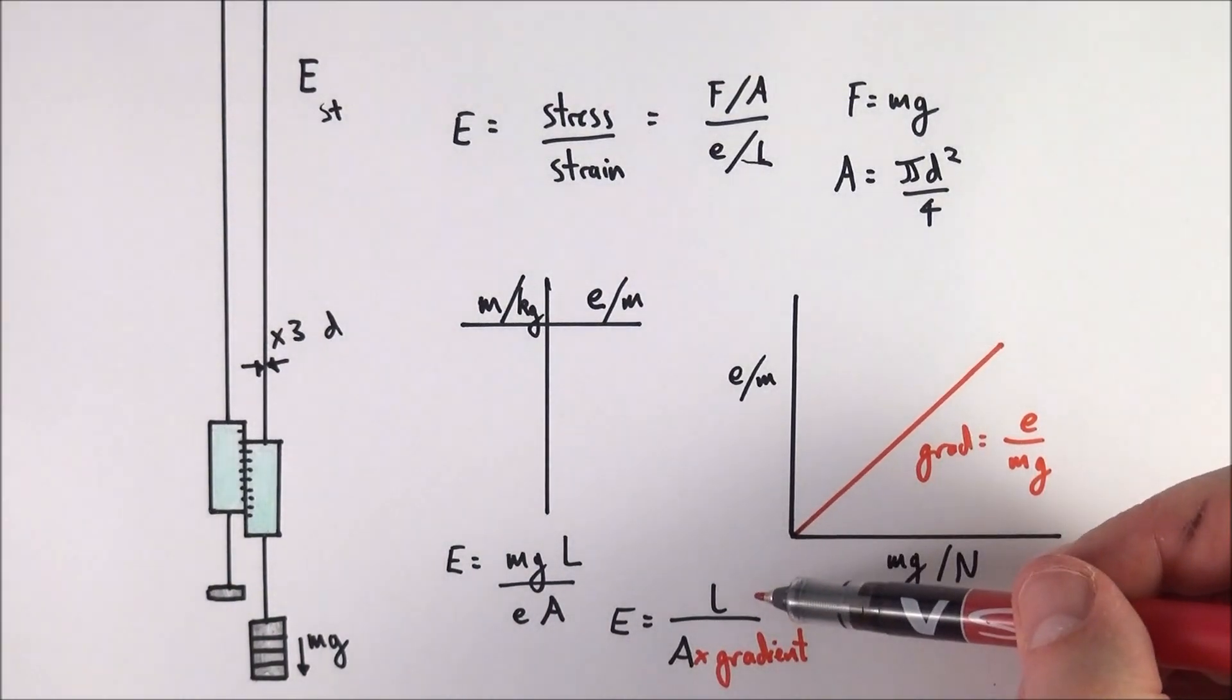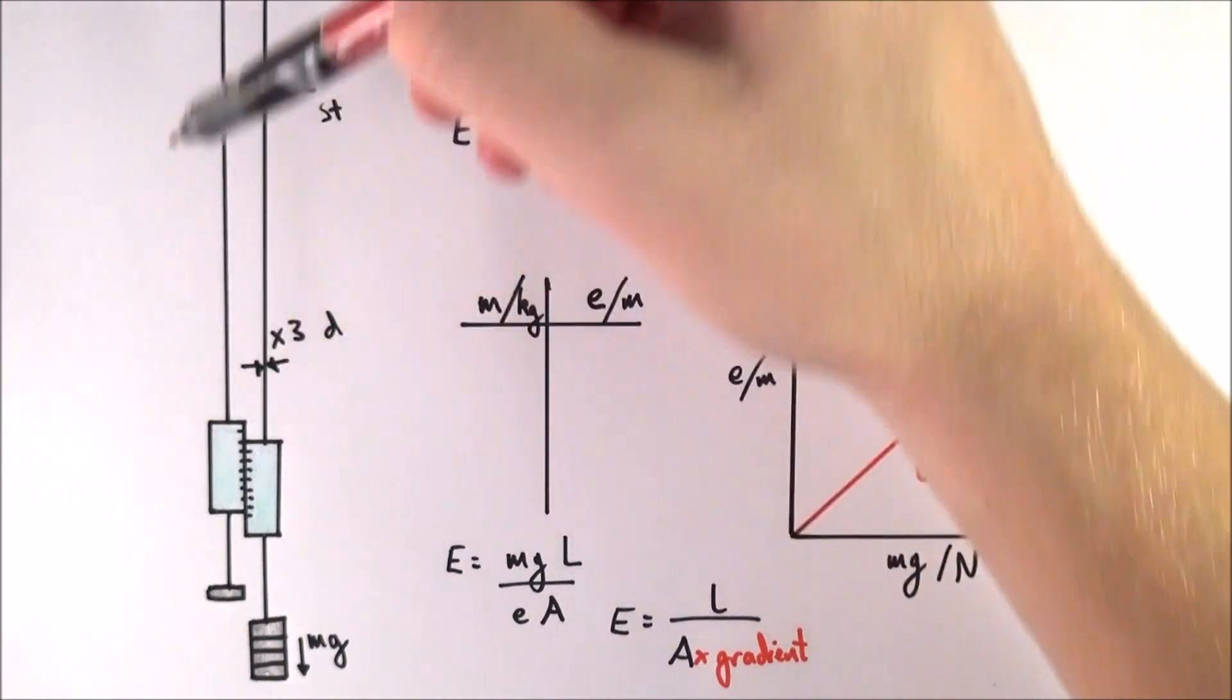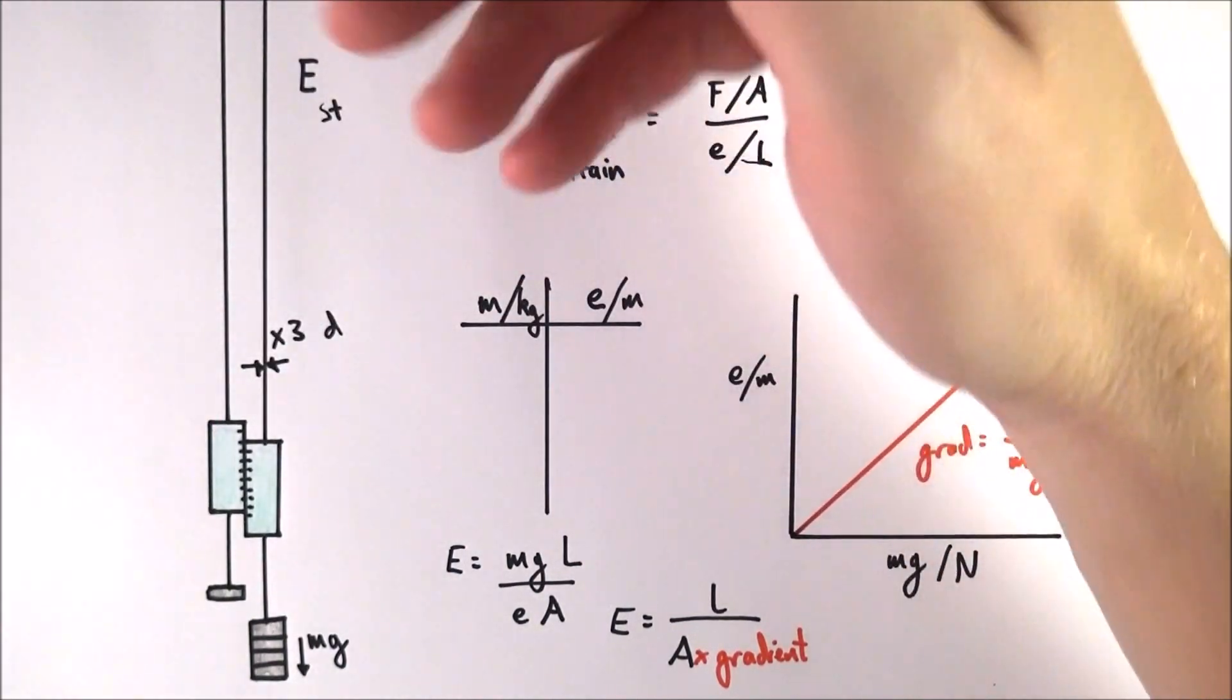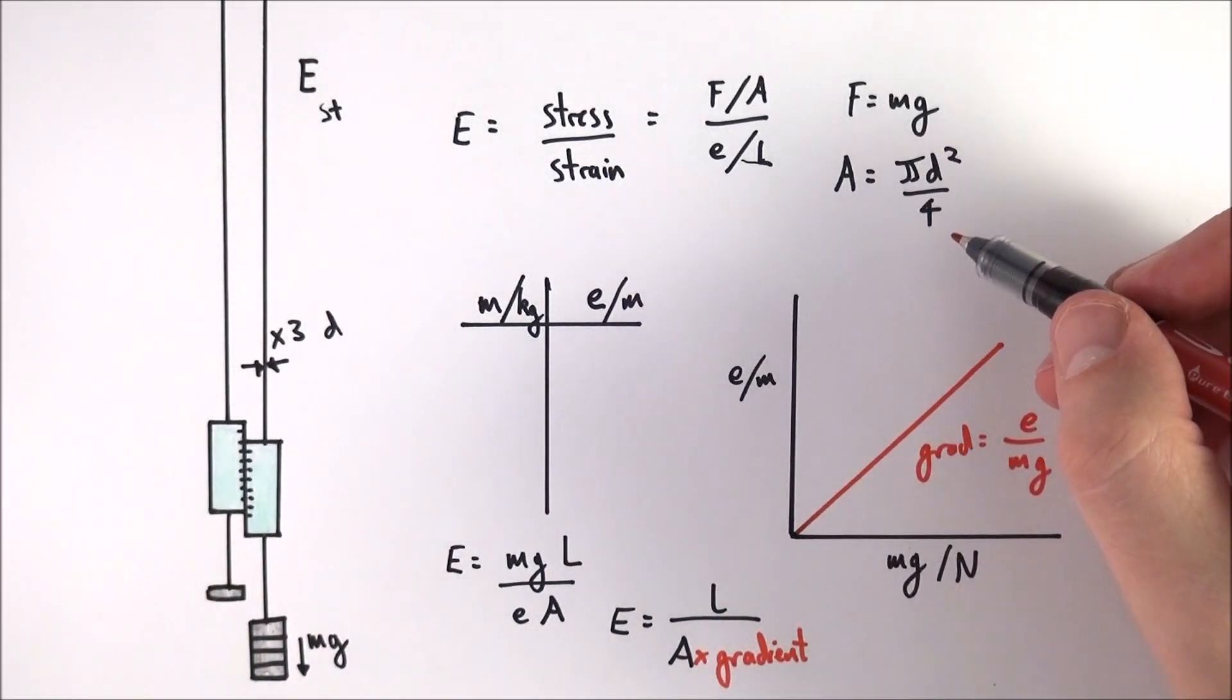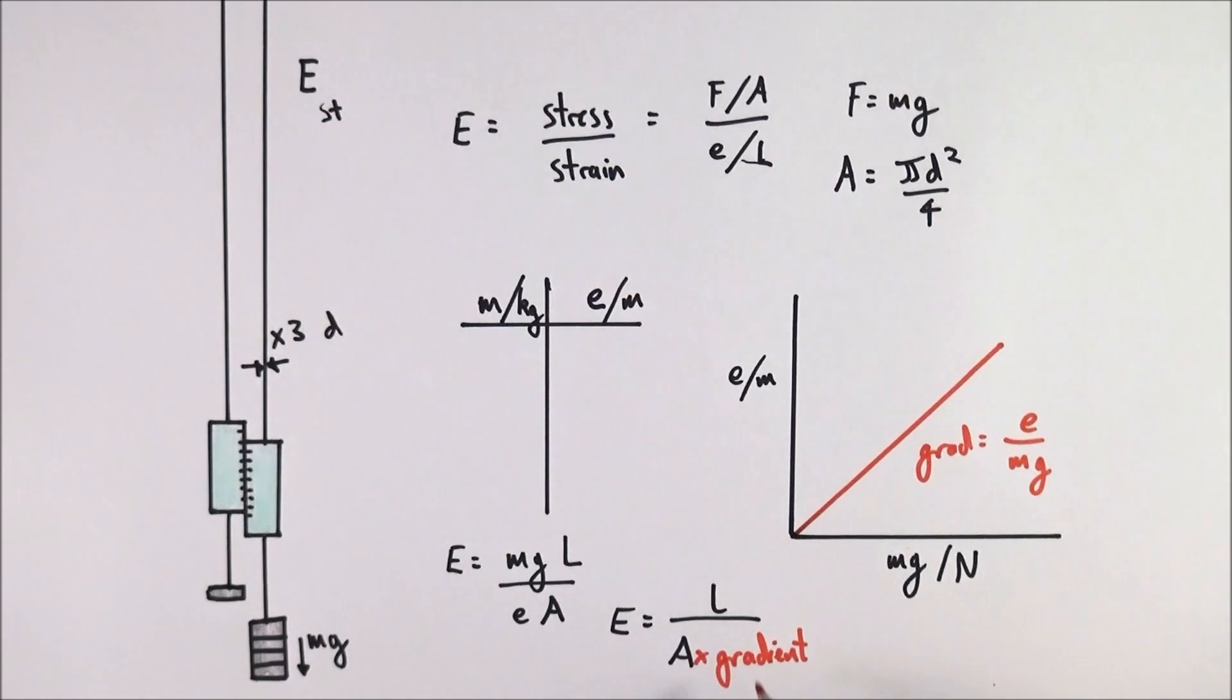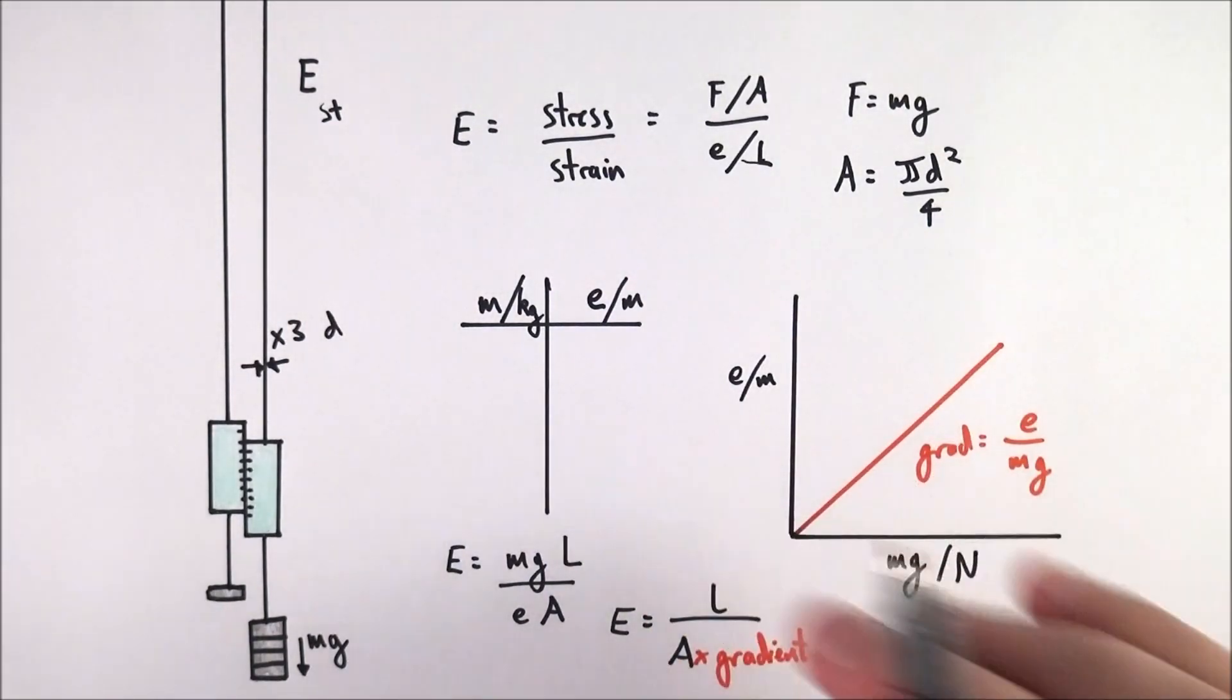So if you know the original length of the wire, which you can from measuring from this distance up to the top where it's secured into a beam or something rigid at the very top, you've got the area that you've calculated by measuring the diameter at least three times, and then you've got the gradient as well which you've worked out from this.